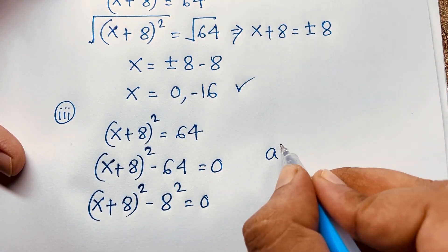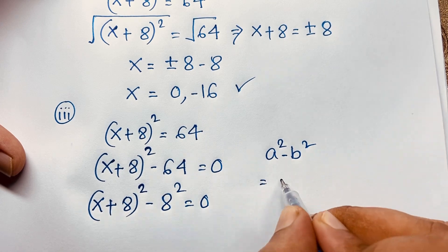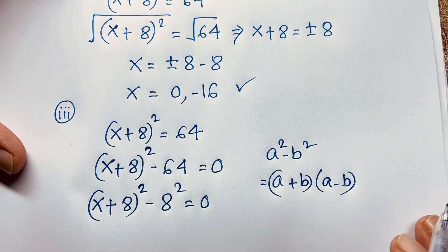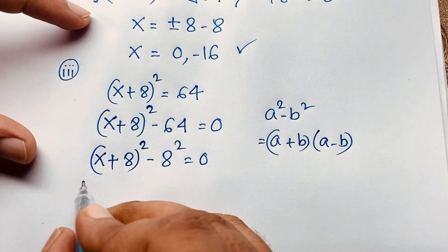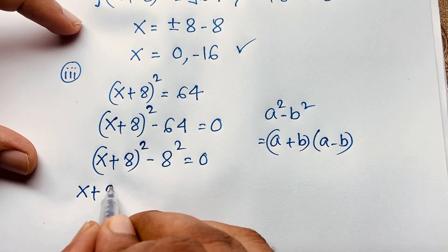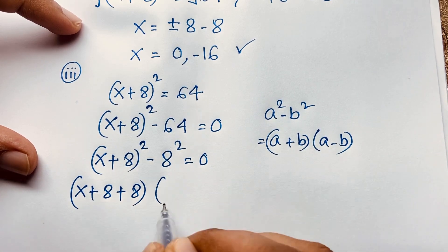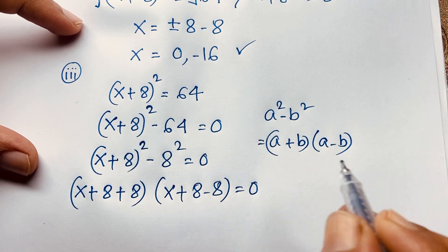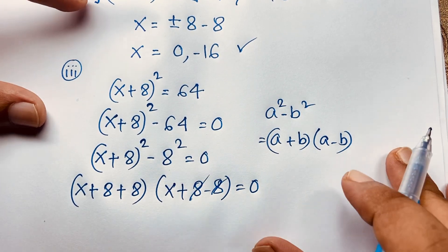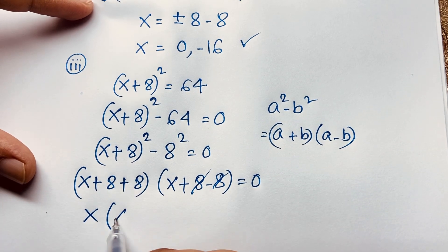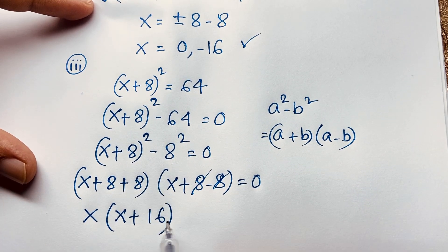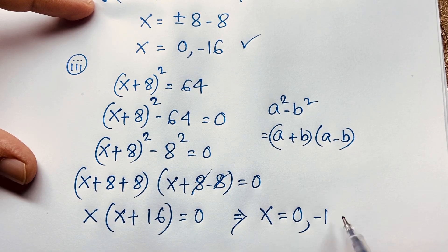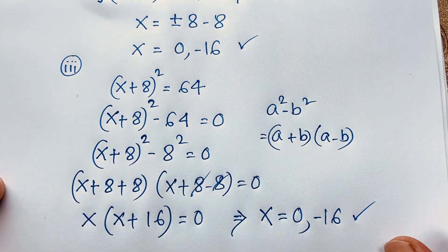We know that a² − b² = (a + b)(a − b). Applying this formula here, we get (x + 8 + 8)(x + 8 − 8) = 0, which simplifies to (x + 16)(x) = 0. So x = 0 and x + 16 = 0, giving x = −16.